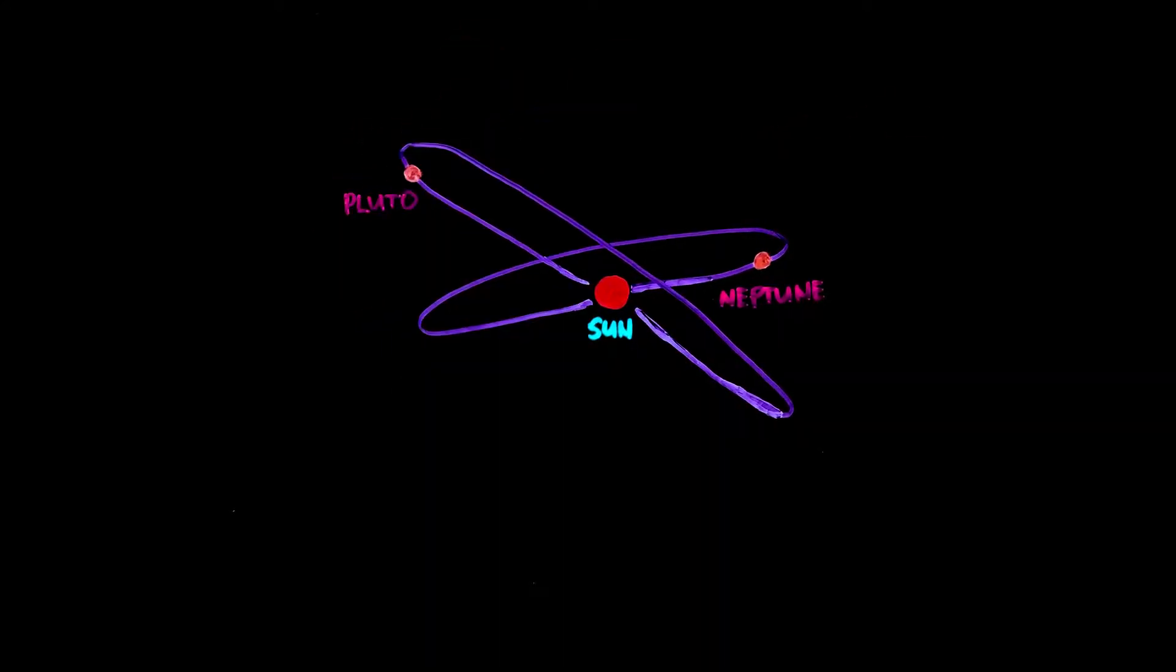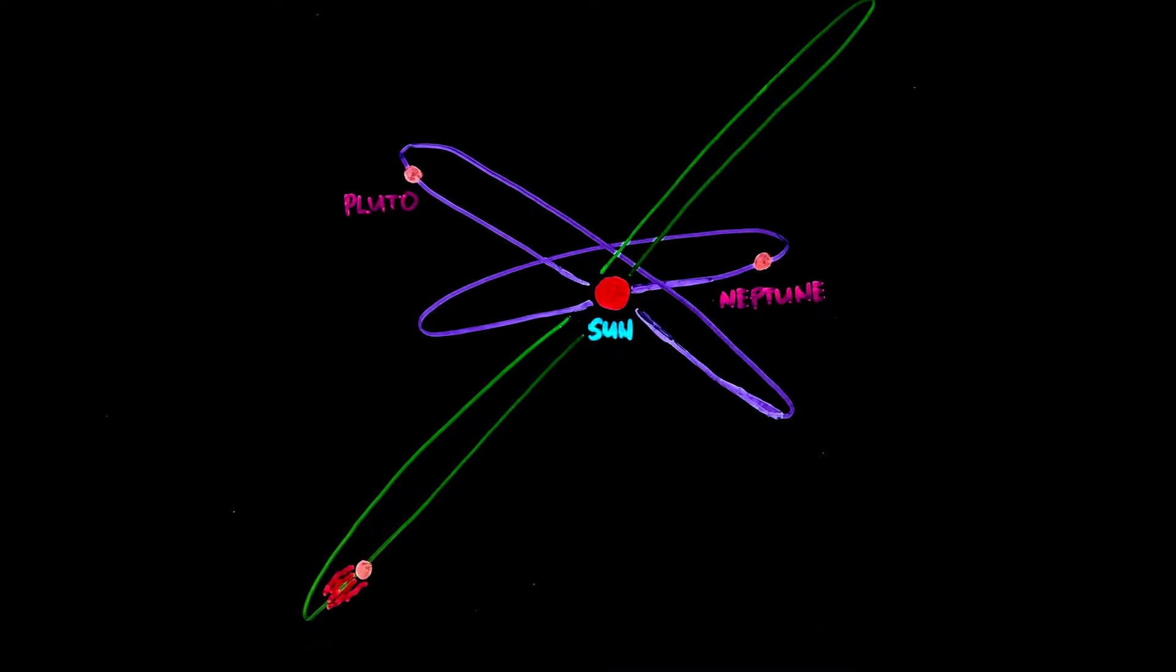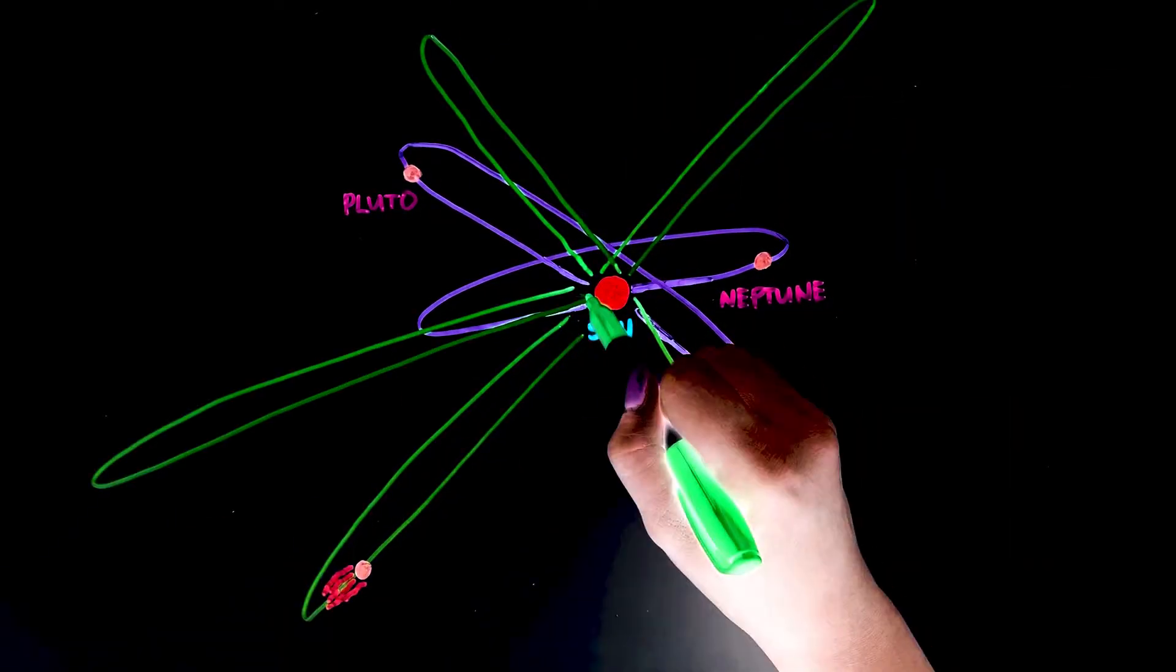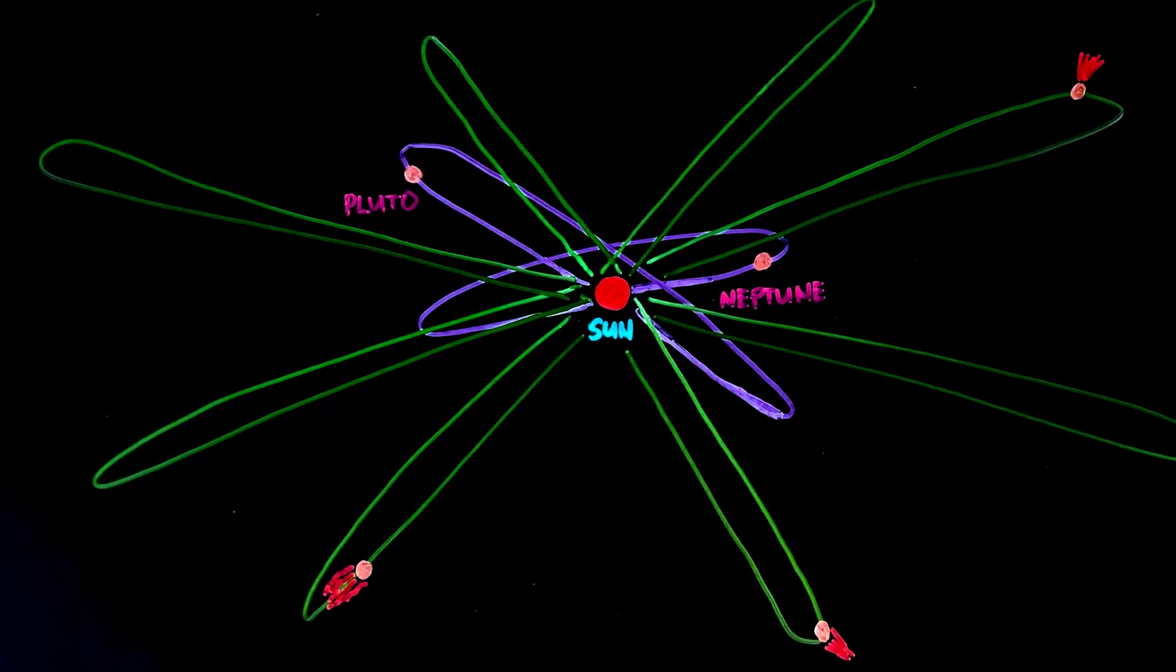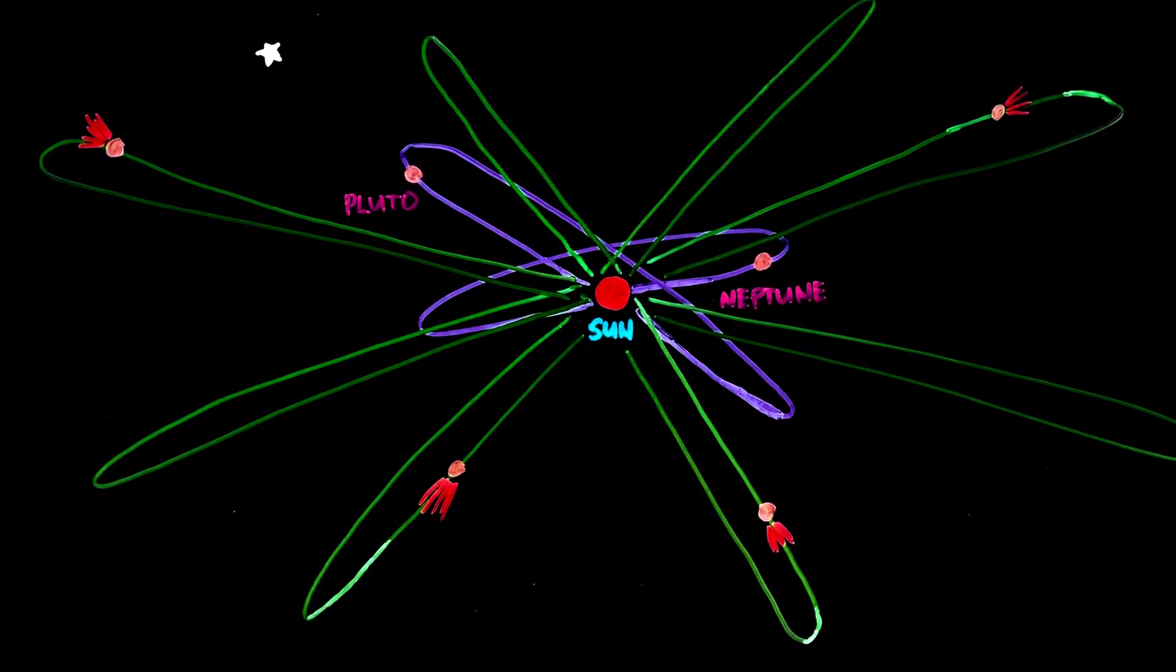This is because the Sun's gravity no longer dominates this part of the solar system, so every now and then, the objects in the Oort Cloud are nudged by the gravitational pull of passing stars in the Milky Way itself, sending comets into our solar system.